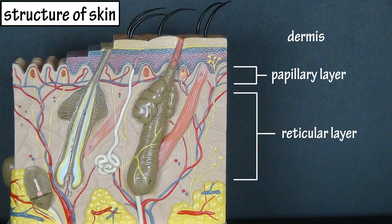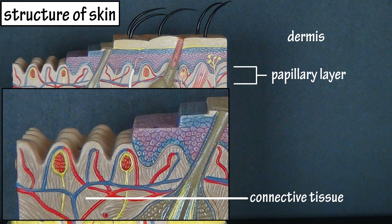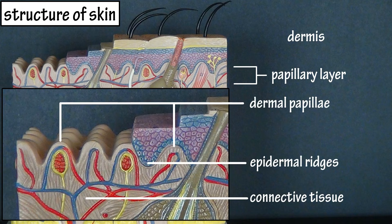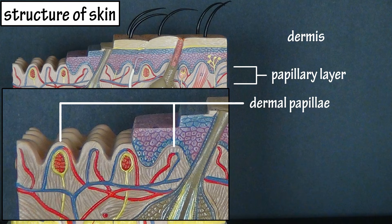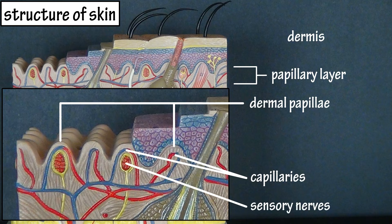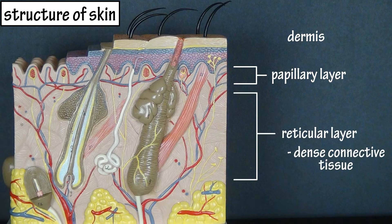The dermis has two layers: a papillary layer and a reticular layer. The papillary layer is the top superficial layer of the dermis. It is composed of loose connective tissue and forms bumps or projections called dermal papillae, that fit with the epidermal ridges of the epidermis. This increases the surface area of contact between the two layers. The dermal papillae contain capillaries that supply nutrients to the cells of the epidermis, and they contain sensory nerve endings that help monitor touch on the surface of the skin. The reticular layer is composed of dense connective tissue with some elastic fibers and many bundles of collagen fibers, and it extends to the deeper subcutaneous layer.